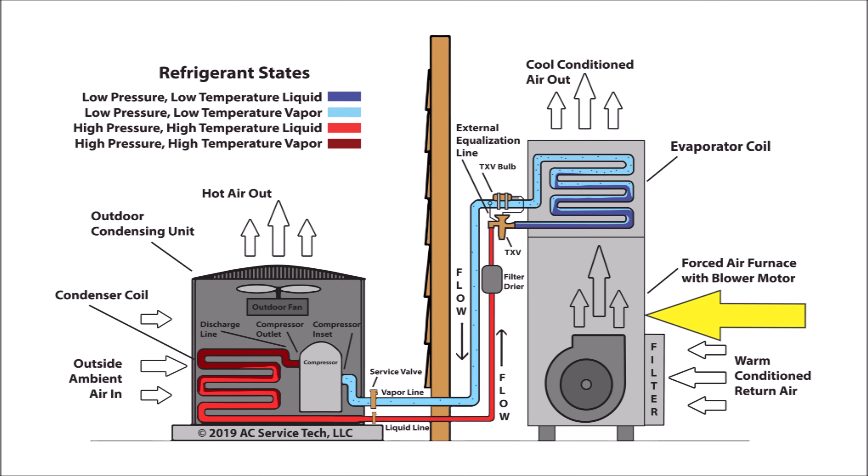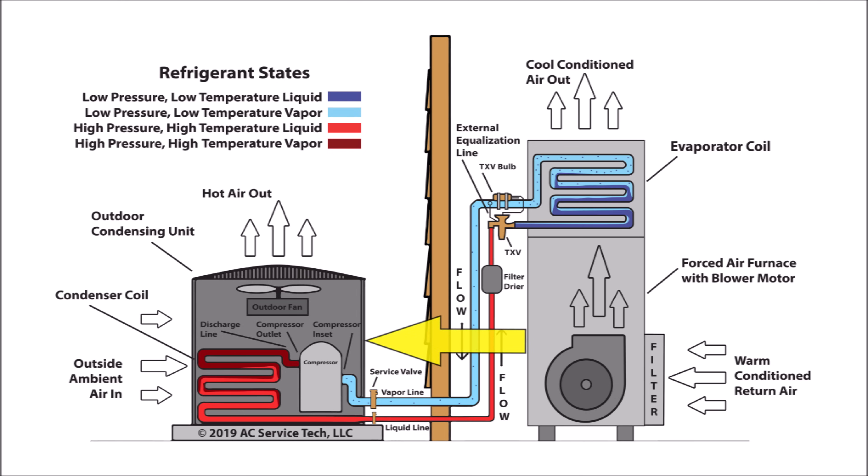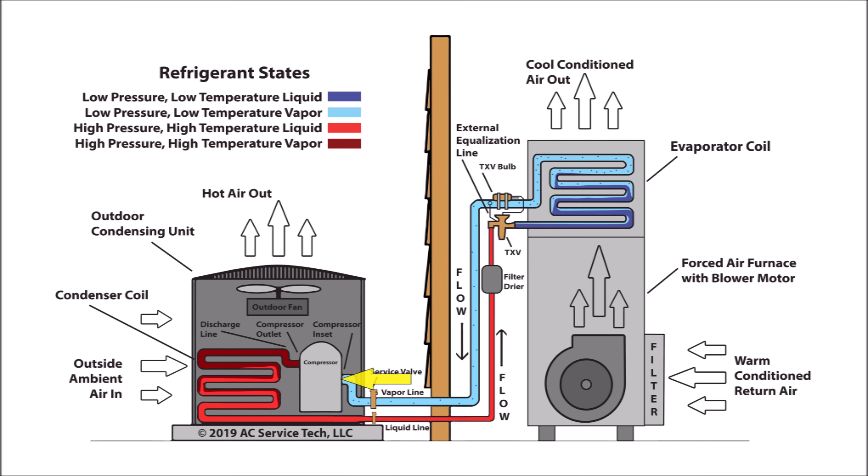In this picture, we have a furnace over on the right-hand side on the bottom — it's a forced air gas furnace — and above that we have an evaporator coil, all located on the right side of the wall. On the left side of the wall, we have an outdoor air conditioning system referred to as an outdoor condensing unit. Over at the top left, you see the refrigerant state — there's a color guide for each of the states that the refrigerant goes through during the refrigeration cycle.